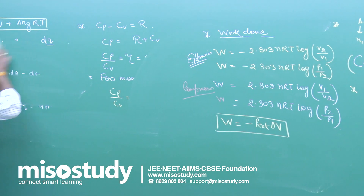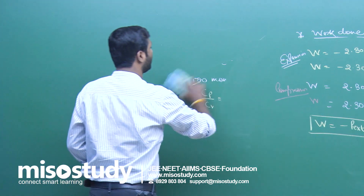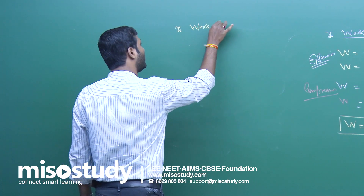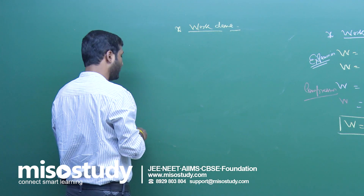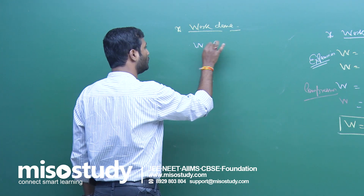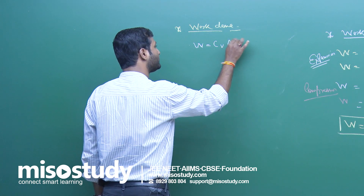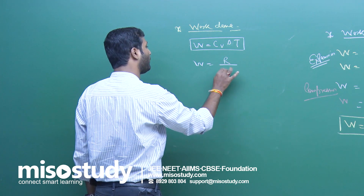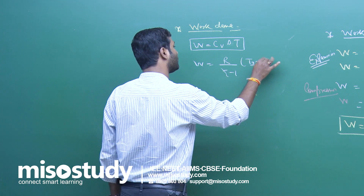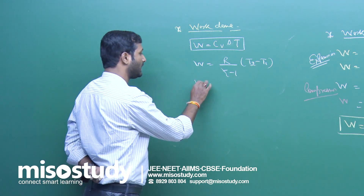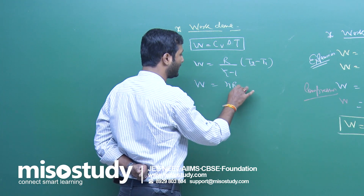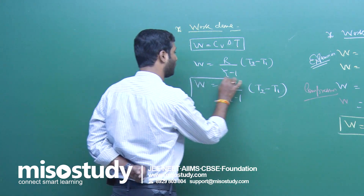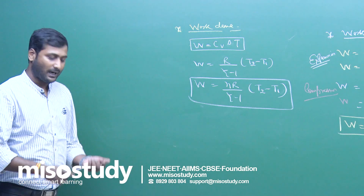For an adiabatic process, the work done w is equal to Cv·ΔT, or equivalently R divided by (gamma minus 1) times (T2 minus T1). For n moles, w equals n·R·(T2 minus T1) divided by (gamma minus 1).